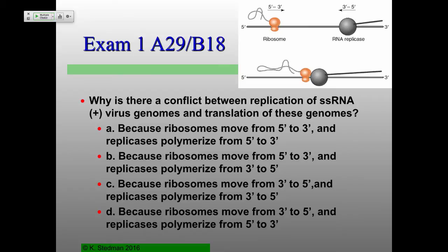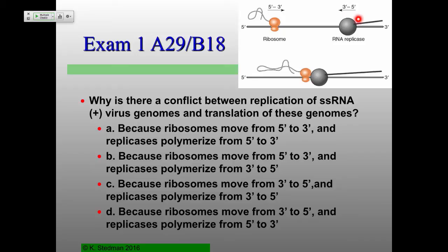This one confused many people and has to do with replication of single-stranded RNA virus genomes. The ribosome moves along the template from 5' to 3'. The replicase moves along the template from 3' to 5' — but it's replicating from 5' to 3'. You're always going 5' to 3'. Nothing goes from 3' to 5' unless you're talking about exonucleases. Does that make sense to people?